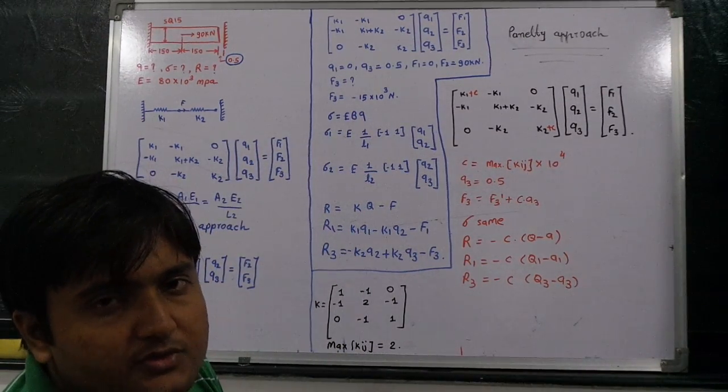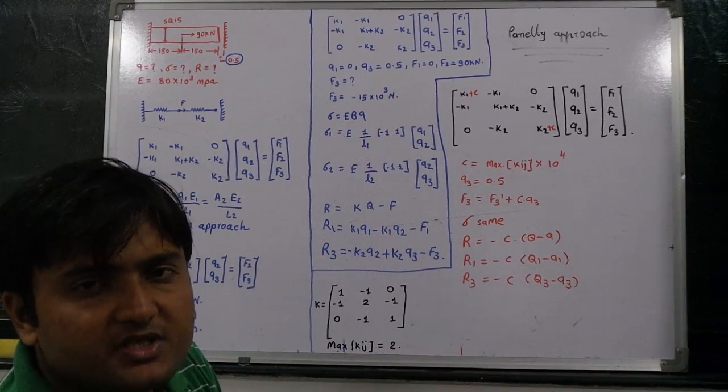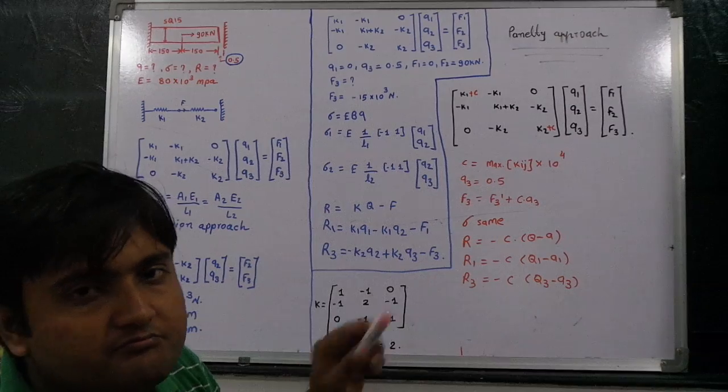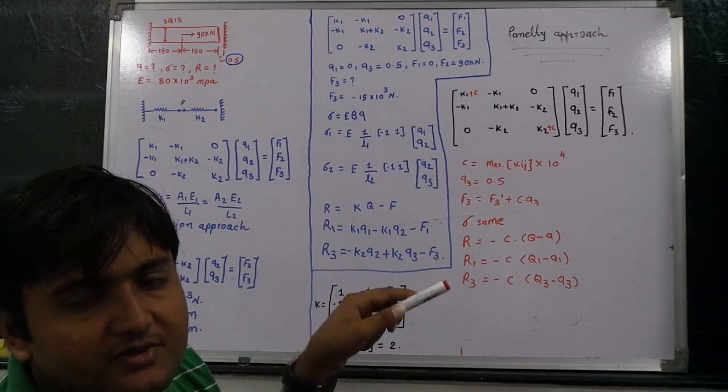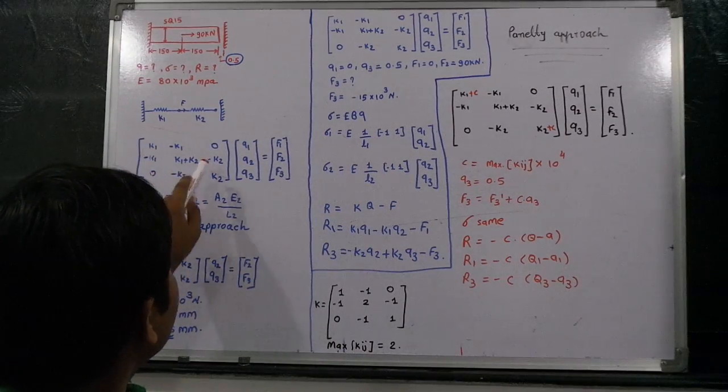By using the elimination approach, q1 means the fixed support at point number 1 should be 0. That is why we need to deduct the first row and the first column from the stiffness matrix.